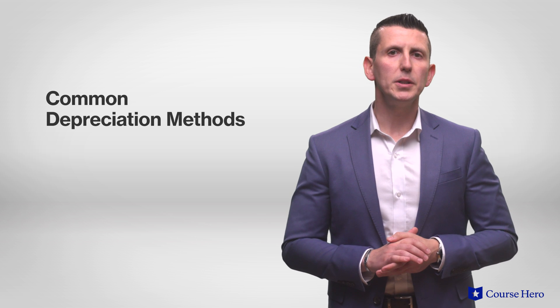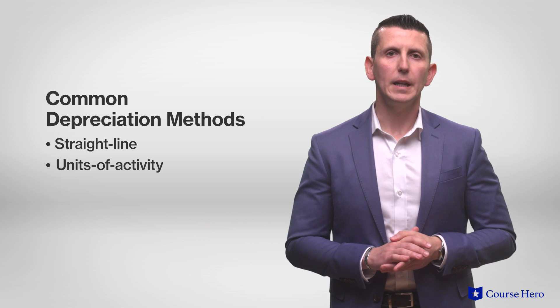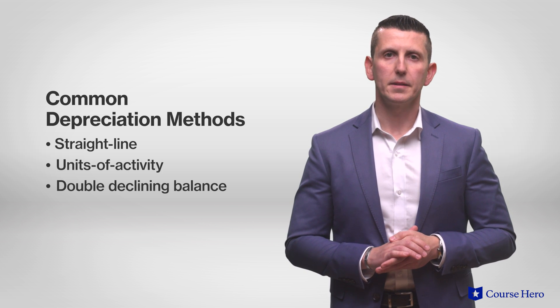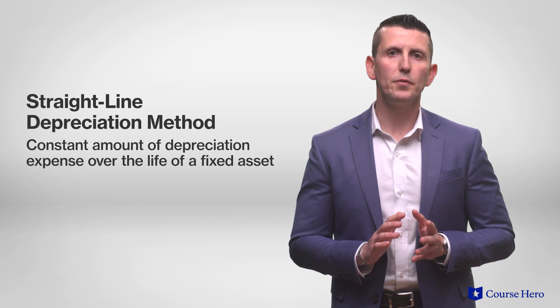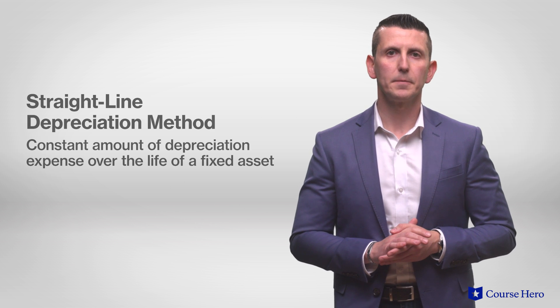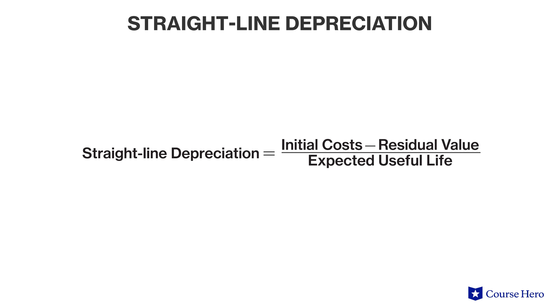There are three common depreciation methods: straight line, units of activity, and double declining balance. The straight line depreciation method provides a constant amount of depreciation expense over the life of a fixed asset. Of the three methods, straight line depreciation is used the most, primarily because it is simple. Straight line depreciation equals initial cost minus residual value divided by expected useful life.